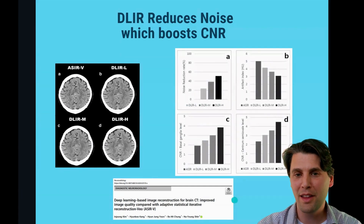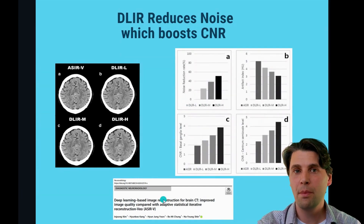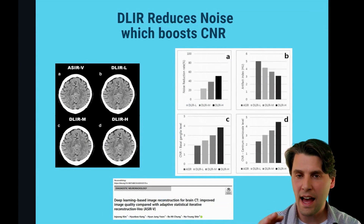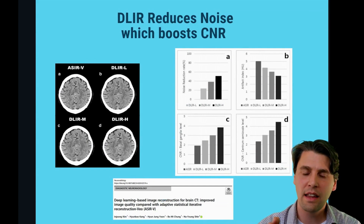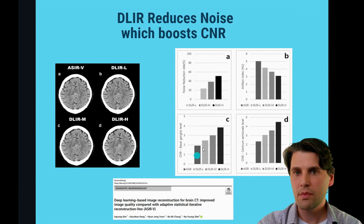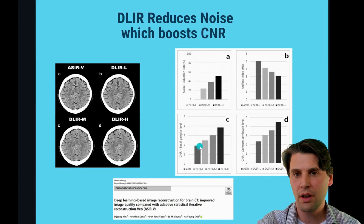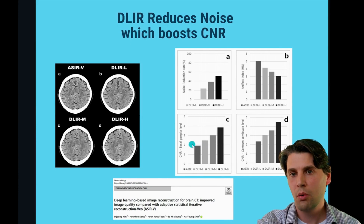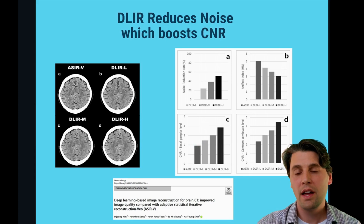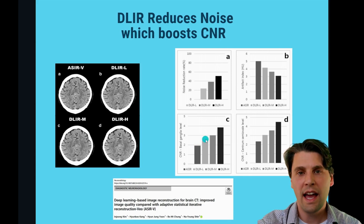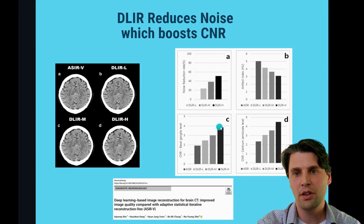This is from Kim et al. They looked at neuroimages and they looked at the standard ASIR, which they were using at their facility, and then performed the contrast-to-noise ratio measurement. The contrast-to-noise of these clinically relevant differences in soft tissue was close to two in the case of the ASIR images, and then it was significantly increased for each level of the deep learning image reconstruction, up to a little bit less than four. So you can see there is significant improvement in the contrast-to-noise ratio.